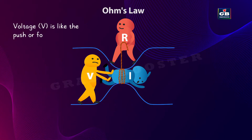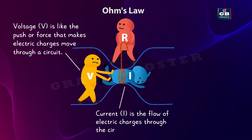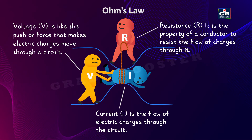Voltage V is like the push or force that makes electric charges move through a circuit. Current I is the flow of electric charges through the circuit. Resistance R is the property of the conductor to resist the flow of charges through it — resistance slows down the flow of electric charges.